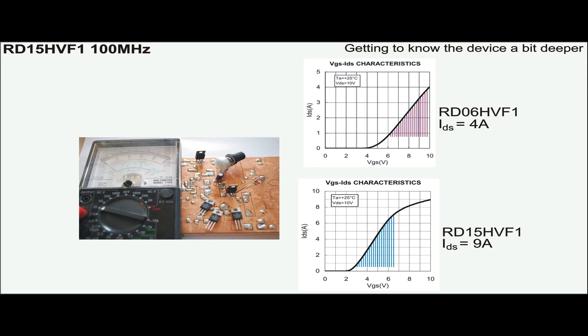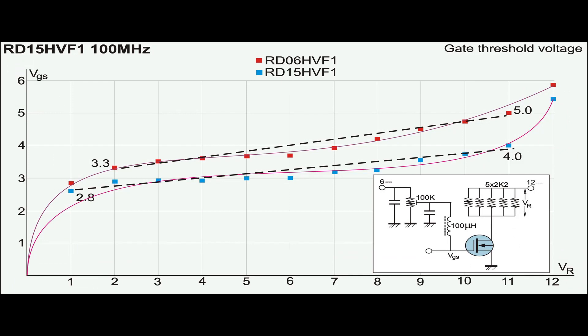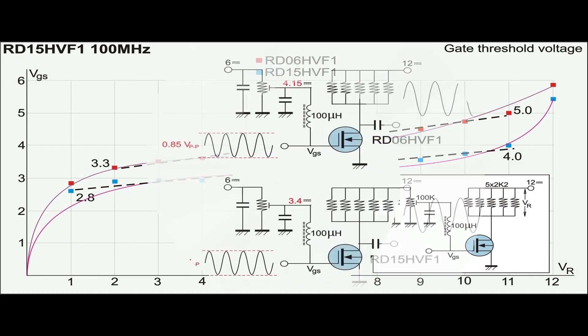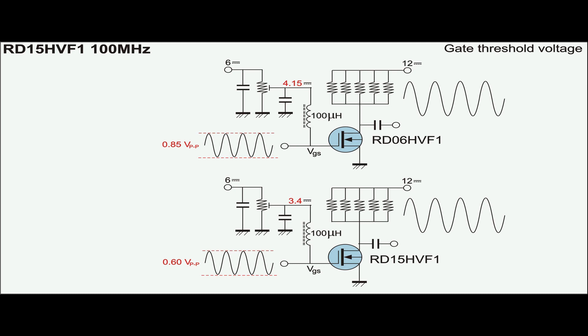Which means if we are to use these devices for linear audio amplifier, the RD-06 will provide greater dynamic range at its input port. But because no one is going to buy RF MOSFET and use them in audio amplifier, so in reality, everybody is going to drive the gate of both transistors to obtain maximum drain current.